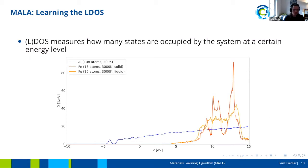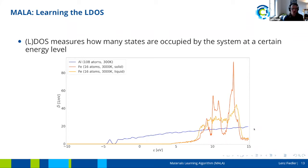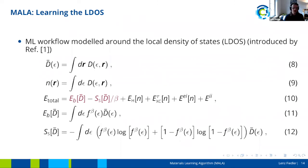Here is the density of states for three different systems — aluminum and iron, both liquid and solid. For different energy levels we get information on how many states are occupied. This is the DOS integrated over the entire real space of the simulation cell, and the local density of states, the LDOS, would be a similar quantity but at each grid point. We can see clear differences between systems — for example, between liquid and solid iron — which shows the energy spectrum carries rich information about the system.